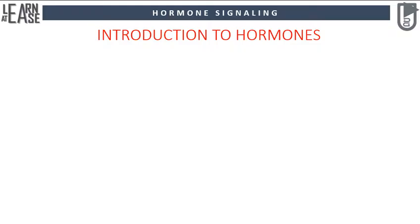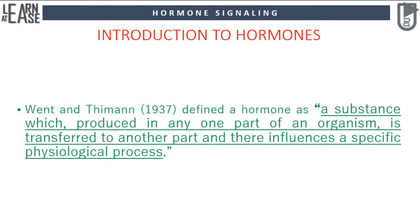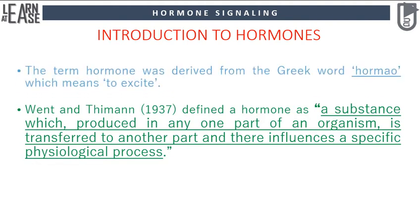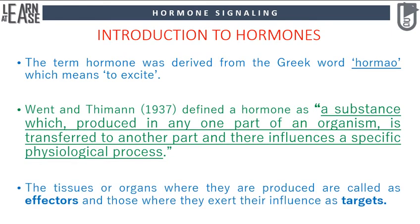In laymen's terms, hormones are the signaling molecules. Wendt and Thiemann in the year 1937 defined a hormone as a substance which, produced in any one part of an organism, is transferred to another part and there influences a specific physiological process. The term hormone was derived from the Greek word 'hormou' which means to excite. The tissues or organs where they are produced are called effectors, and those where they exert their influence are called targets.